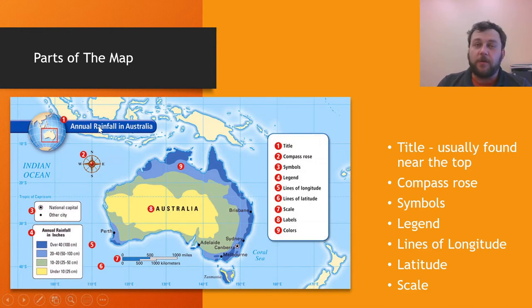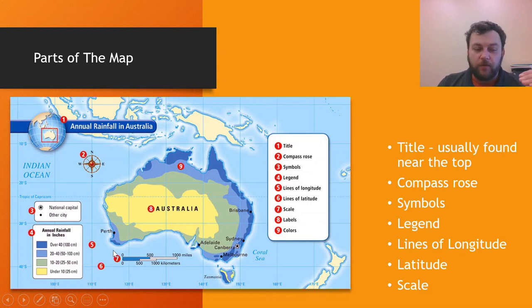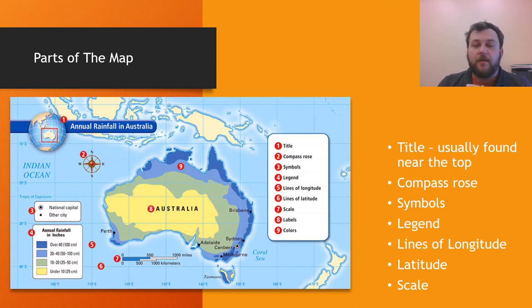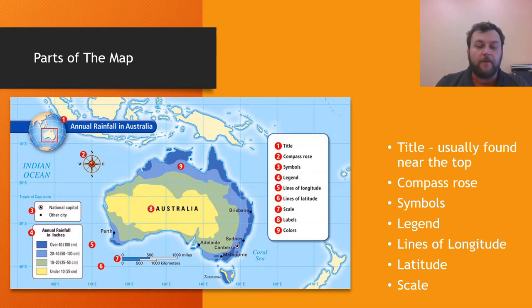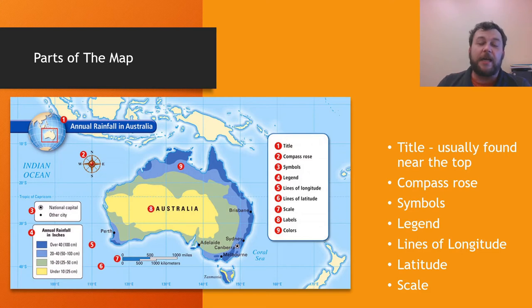The different colors — we know from the label it's annual rainfall in Australia, and over here the legend describes the colors. Blue is over 100 centimeters, lighter blue is 20 to 40 inches, green is 10 to 29 inches, and yellow is 10 inches or less of rainfall. Just by looking at this map, we can tell that the central area of Australia is getting less than 25 centimeters of rain per year — very, very dry. Both of these maps also have lines of longitude and latitude, which is very important when measuring between places. When you use Google Maps on your phone, it is using lines of longitude and latitude to tell the satellites where you're at, where you're going, and how you're going to get there.